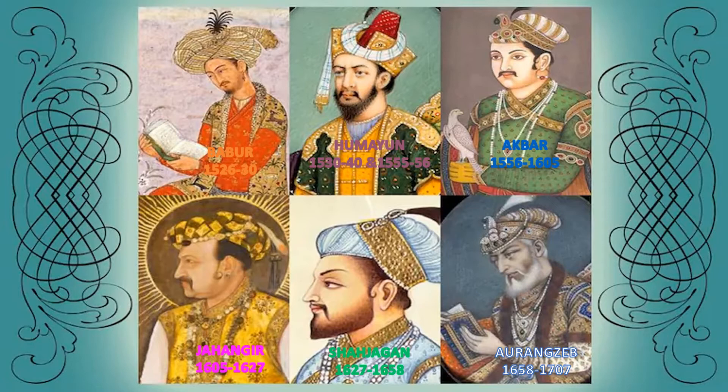Then the weaker Mughals ruled the Mughal Empire till 1857. In 1857, the last Mughal Emperor Bahadur Shah was captured and sent to Rangoon, where he was executed in the year 1862. Thereafter, the Mughal era came to an end, and the Mughal Empire directly went into the hands of the British after 1862 permanently.